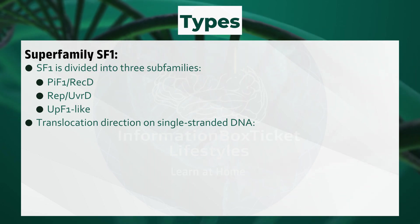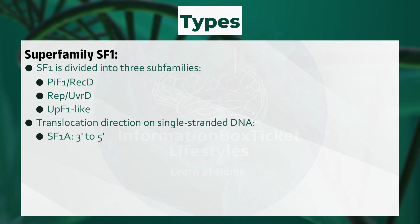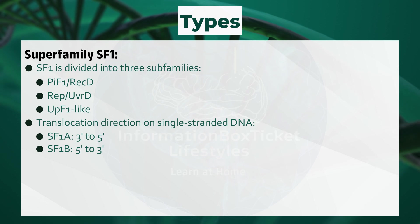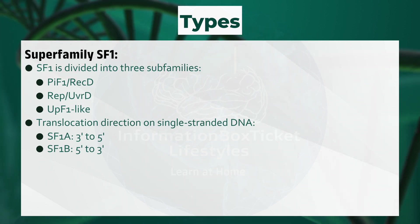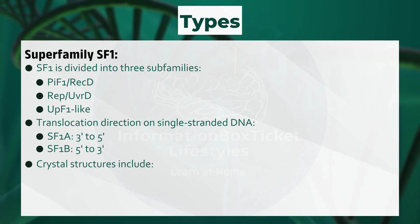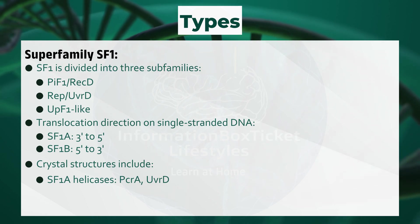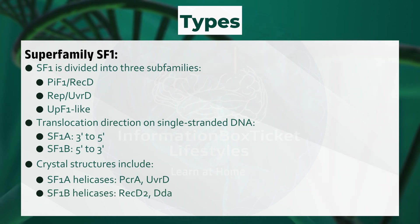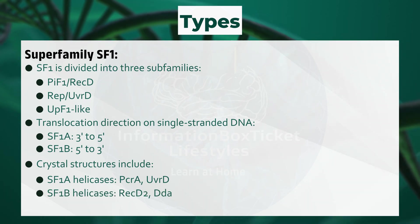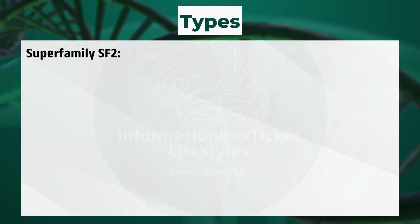Translocation direction on single-stranded DNA: SF1A moves 3' to 5', and SF1B moves 5' to 3'. Crystal structures include SF1A helicases PcrA and UvrD, and SF1B helicases RecD2 and DdA.